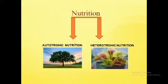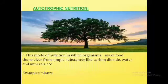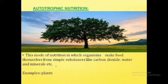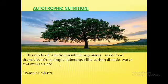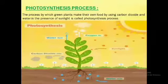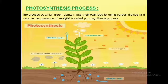Now let us talk about plants. In plants, nutrition is of two types: one is autotrophic nutrition and the other is heterotrophic nutrition. Autotrophic nutrition is the mode of nutrition in which organisms make food themselves from simple substances like carbon dioxide, water, and minerals. Green plants make their own food and gain energy from it without depending on anyone else.